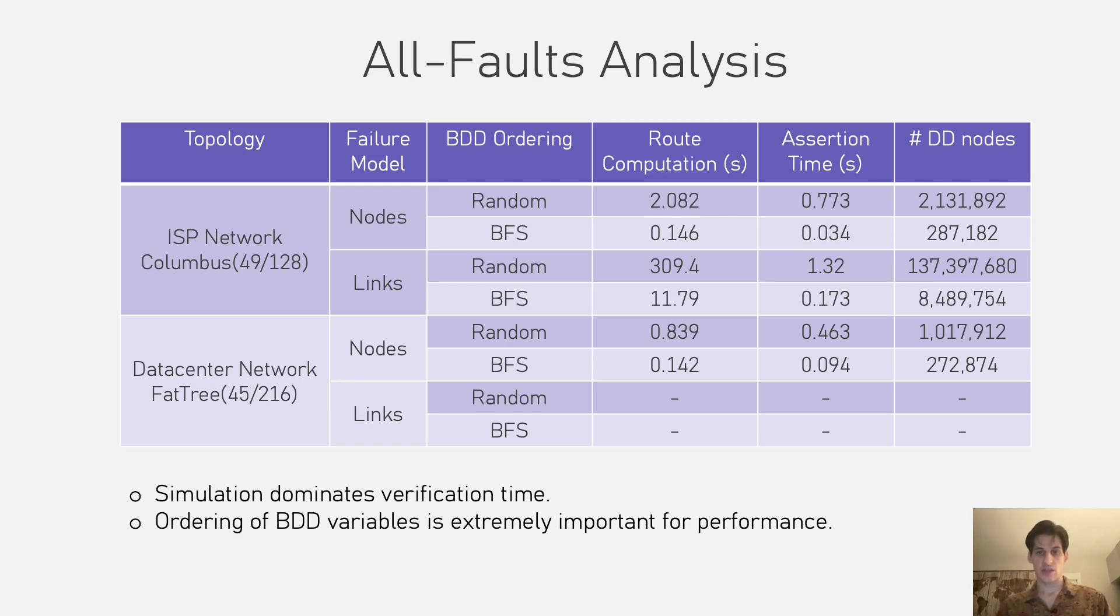The BFS ordering, as you can see, worked much better than the random one, and this is reflected in both the computation time and also in the size of the decision diagrams generated throughout simulation, where there is at least an order of magnitude difference.